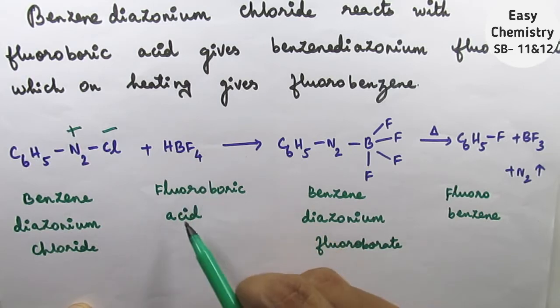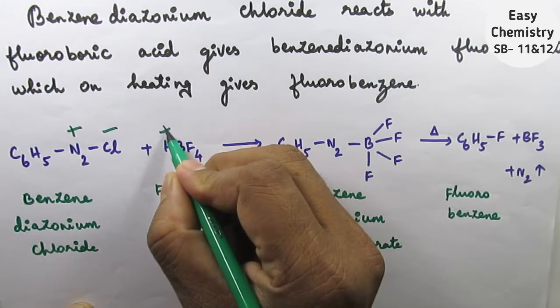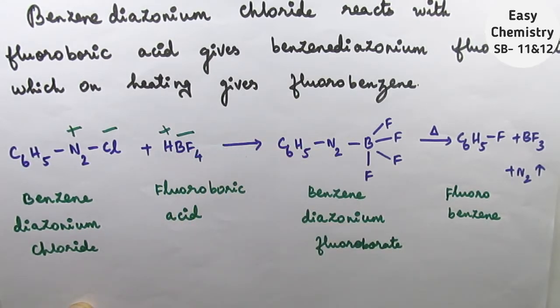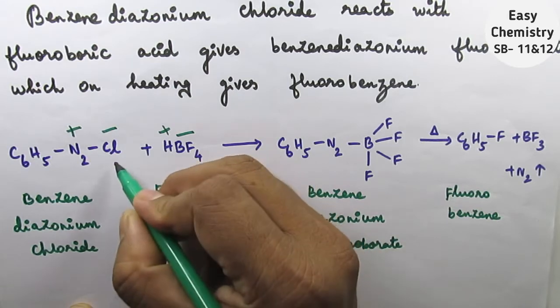That is fluoroboric acid, HBF4 hydrogen plus BF4 minus. Now plus and minus replace, H plus Cl minus combine.